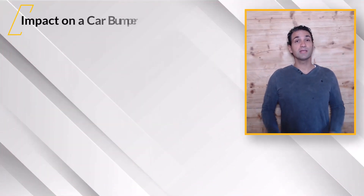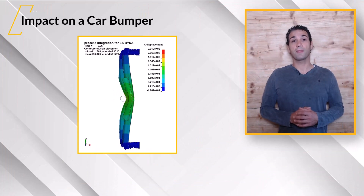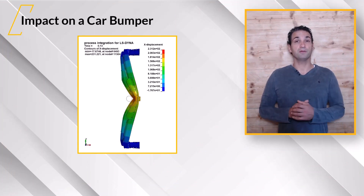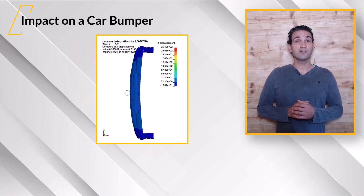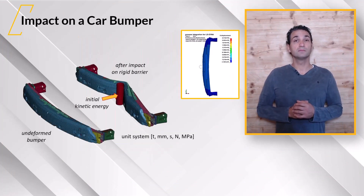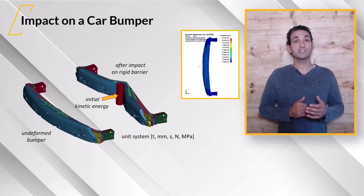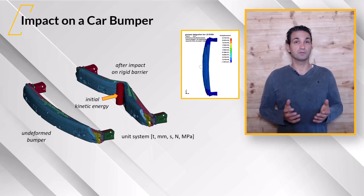In this course, I will explain how to do parametric variation analysis for LS-Dyna using OptiSlang, based on a practice-oriented use case. As an example, let's consider the impact of a car bumper on a rigid barrier. Instead of representing the entire car, we just let the barrier hit the bumper.